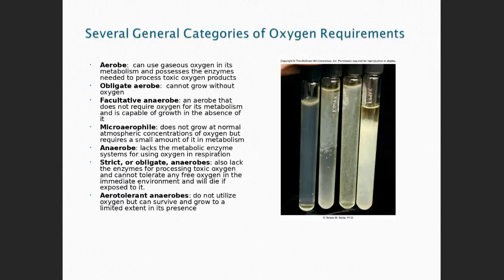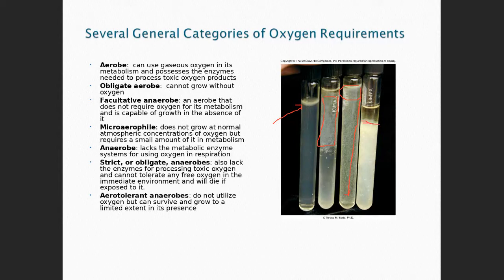If we look at a visual test: an organism only growing at the meniscus is an aerobe. One growing slightly below the meniscus and about halfway through the tube is a microaerophile. An organism growing mostly at the top but also throughout the tube with less growth elsewhere is a facultatively anaerobic organism. And here you can see an anaerobe — when it's overgrown it starts to push up, but it won't get near the area of the thioglycolate tube where there is oxygen, because oxygen is toxic to an anaerobe.